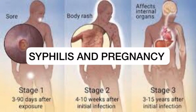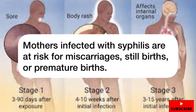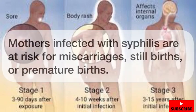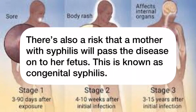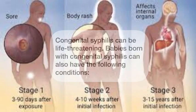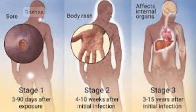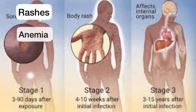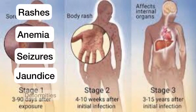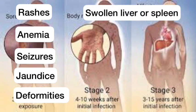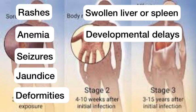Syphilis and pregnancy. Mothers infected with syphilis are at risk for miscarriages, stillbirth, or premature birth. There is also a risk that a mother with syphilis will pass the disease on to her baby. This is known as congenital syphilis. Congenital syphilis can be life-threatening. Babies born with congenital syphilis can also have rashes, anemia, seizures, jaundice, deformities, swollen liver or spleen, and developmental delays.